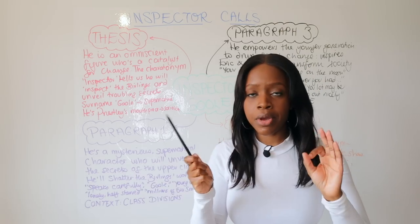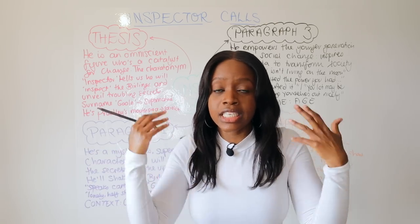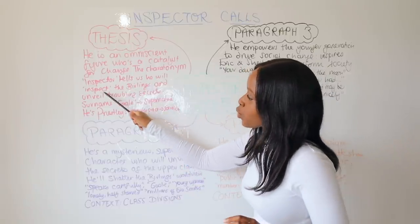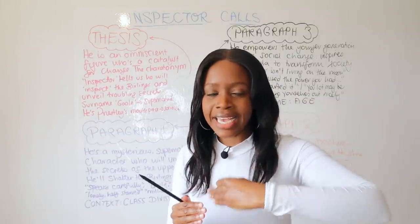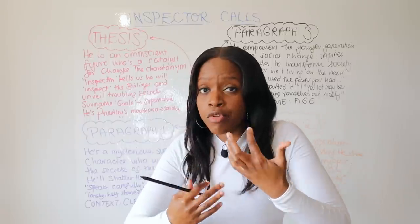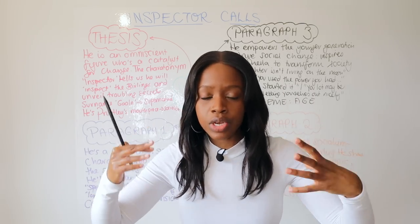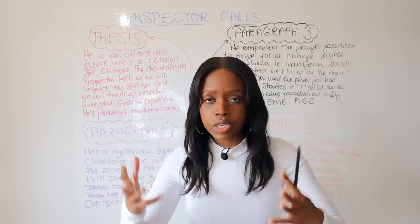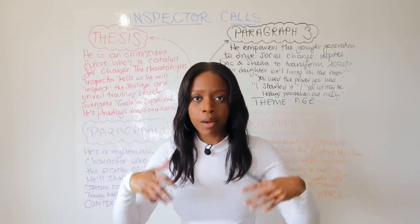Remember the character name 'Inspector' — a correctonym — where the name indicates something about who they are. Priestley uses this to tell us he will inspect the Birlings and unveil troubling secrets. By extension, the Inspector is also inspecting Priestley's audience — the upper middle class and upper class — making them reflect on their actions, their greed, and whether carrying on as they are will continue to sow seeds of instability in British society that might lead to a third world war.